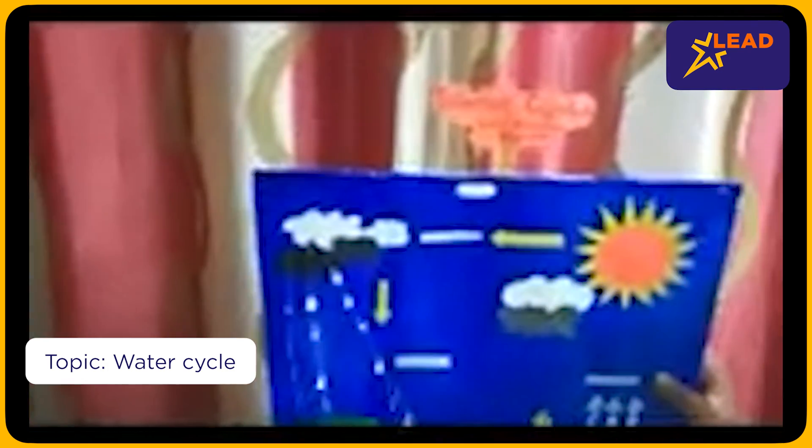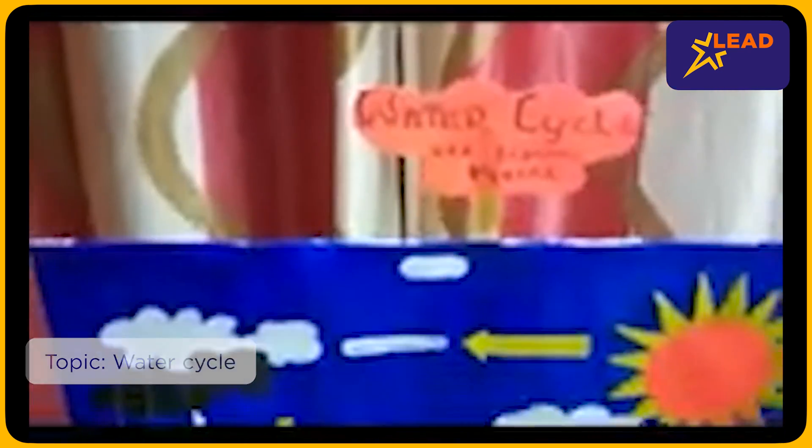The water cycle consists of four stages: evaporation, condensation, precipitation, and collection.